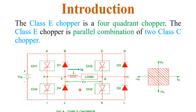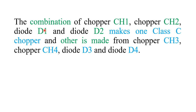This is the VI plane of class E chopper. Class E chopper works in all 4 quadrants. In the 1st quadrant, output voltage and current are both positive. In the 2nd quadrant, output voltage is positive but current is negative. In the 3rd quadrant, both output voltage and current are negative. In the 4th quadrant, output current is positive but output voltage is negative. CH1 and CH2 with diodes D1 and D2 form one class C chopper, and CH3, CH4, D3, D4 form the other.